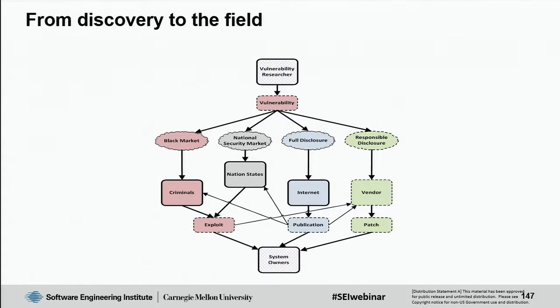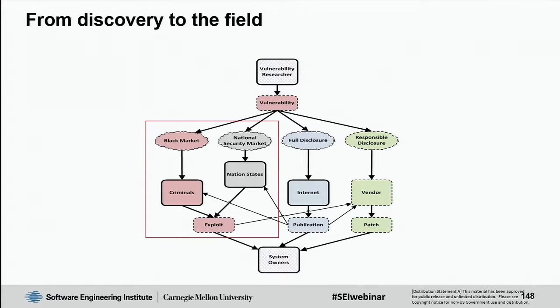There are a few different routes a vulnerability can take after it's discovered by a third-party researcher. The researcher can choose to sell the vulnerability to either the black market or the national security market, in which case you as the vendor will likely never hear about it unless it's discovered after being used in the wild. The other two options — full disclosure and responsible disclosure — represent what you want as a vendor: researchers disclosing to you before the general public, so you have time to create a patch.